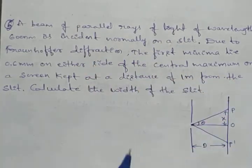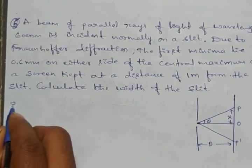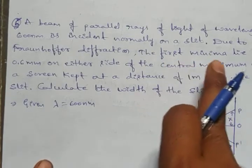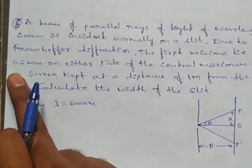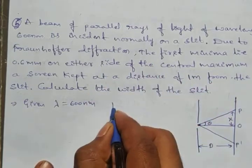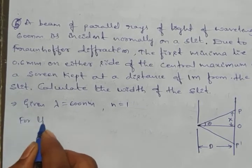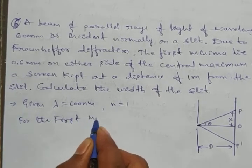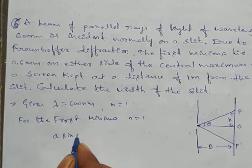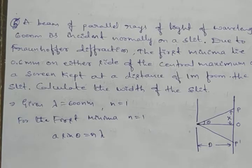For single slit diffraction, the given data: lambda is equal to 600 nanometers. The first minima lie at a distance of 0.6 millimeters. For the first minima, n is equal to 1. We know the condition for the first minima: a sine theta is equal to n lambda, so with n equal to 1, a sine theta equals lambda.